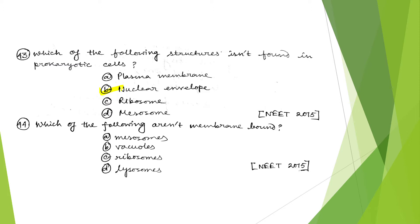The next question: which of the following are not membrane-bound? The options are mesosomes, vacuoles, ribosomes, and lysosomes. It is a very easy question. Ribosomes have no membrane, so the correct answer is option C.